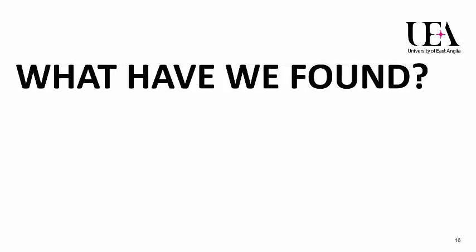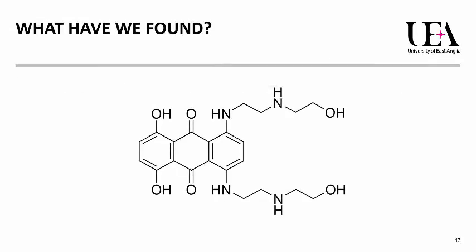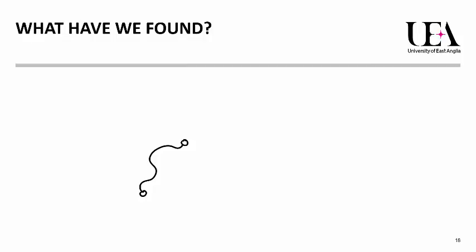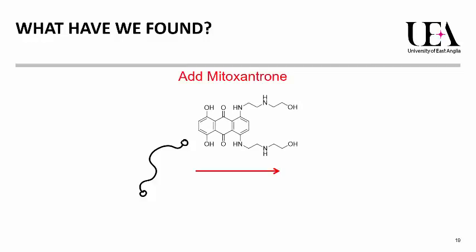So what have we found? We have discovered a new family of molecules which can bind and stabilise the iMotif structures in DNA. The best one of them is actually a known drug called Mitoxantrone. Here is the structure of the drug. We also found that if you have a sequence which is capable of forming an iMotif and it's unfolded, you can add Mitoxantrone and the DNA folds into the iMotif — and you can do this without changing the pH. iMotif DNA usually needs acidic conditions to form, so this is a very interesting find, as the compound can help the DNA fold under physiological, or normal body, conditions.